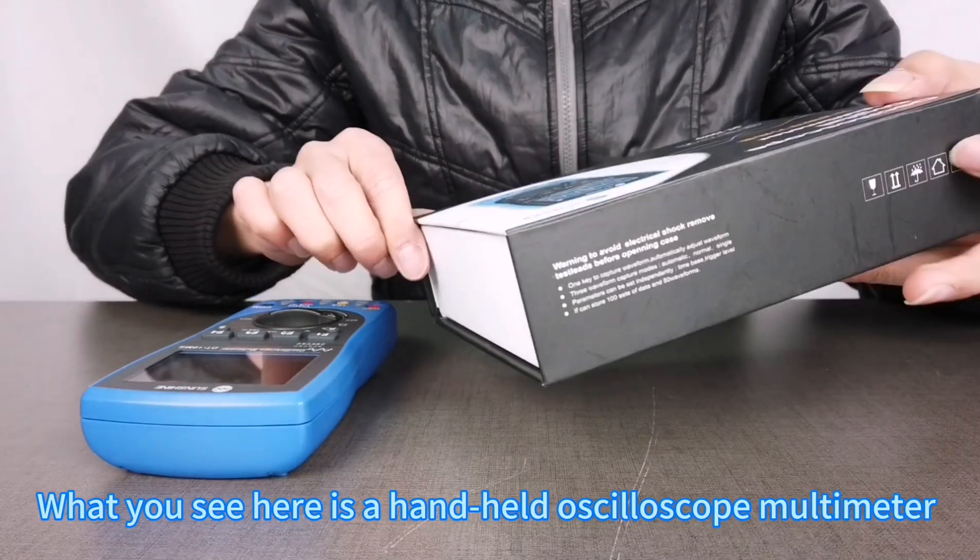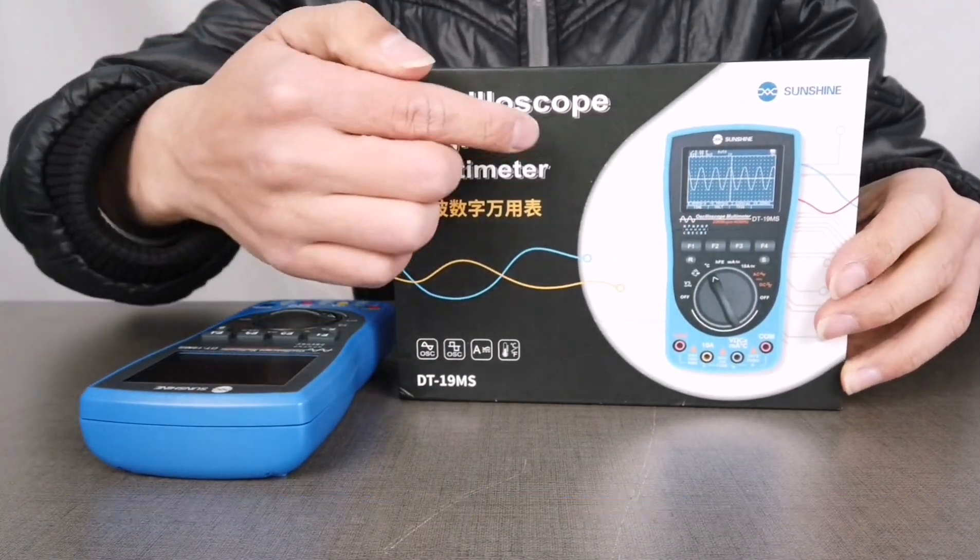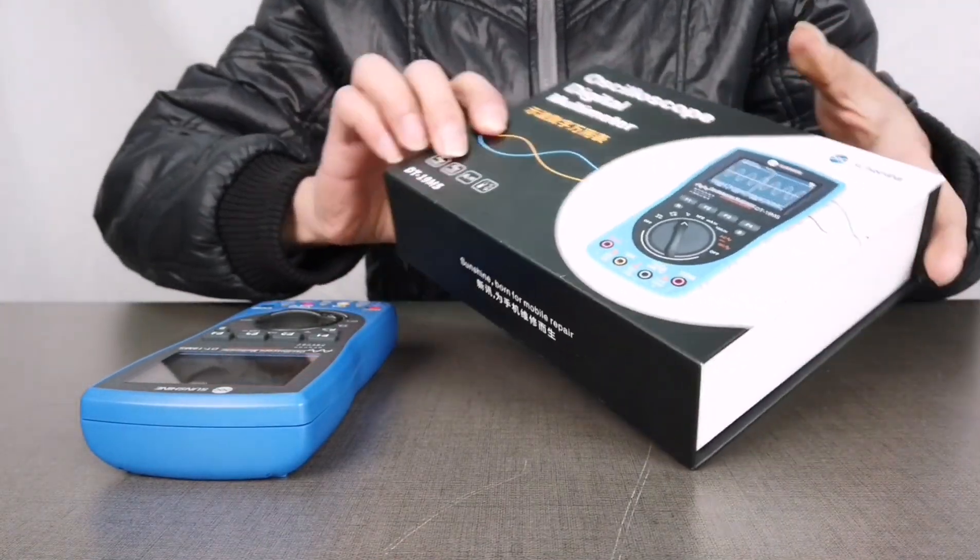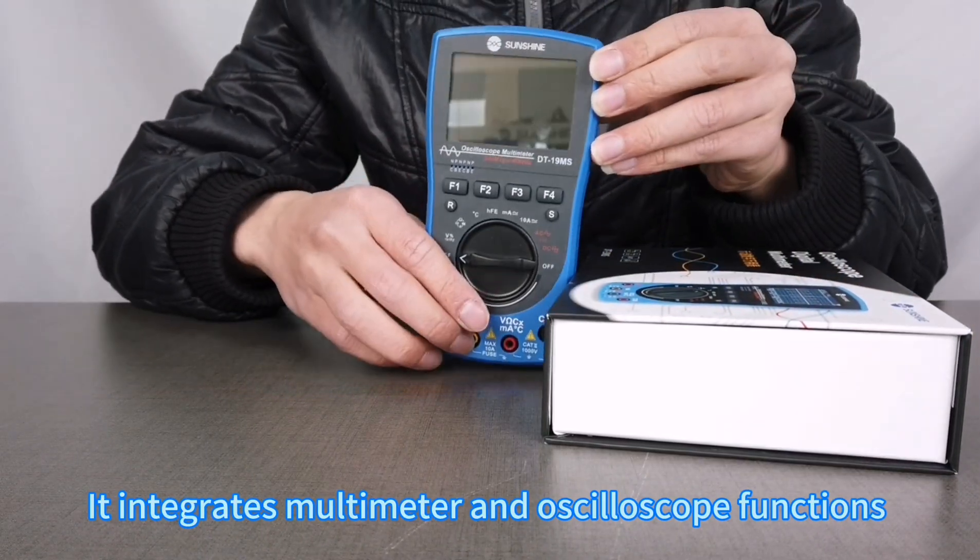What you see here is a handheld oscilloscope multimeter. It integrates multimeter and oscilloscope functions.